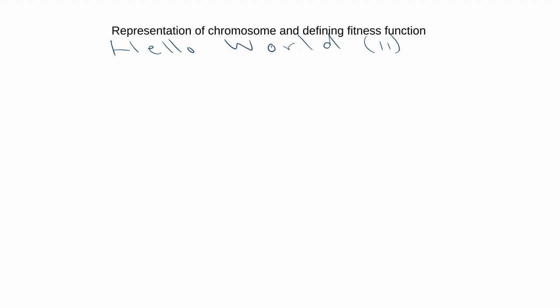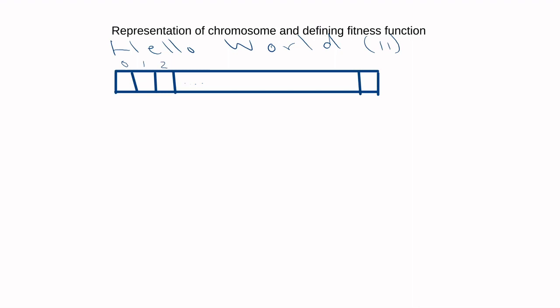The easiest way to represent this is to use a simple one-dimensional array that can contain letters. The array runs from position zero all the way to position 10, giving us a length of 11 — matching 'Hello World'. Because we're not evolving strings of various sizes, we just fix the array length.